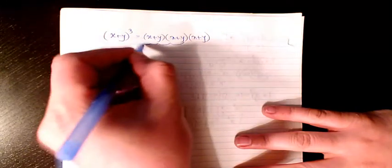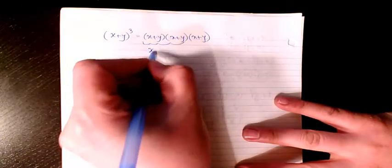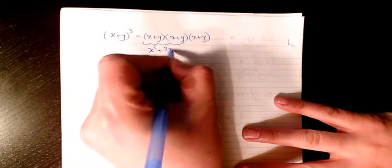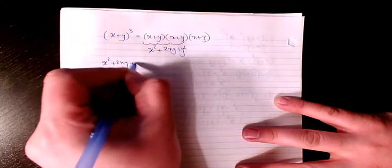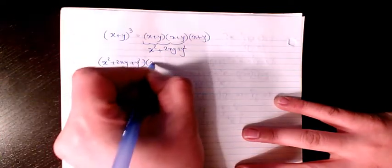So the answer for the first two is x² as we had it before, 2xy plus y². That's what we had earlier. So (x² + 2xy + y²) times (x + y).